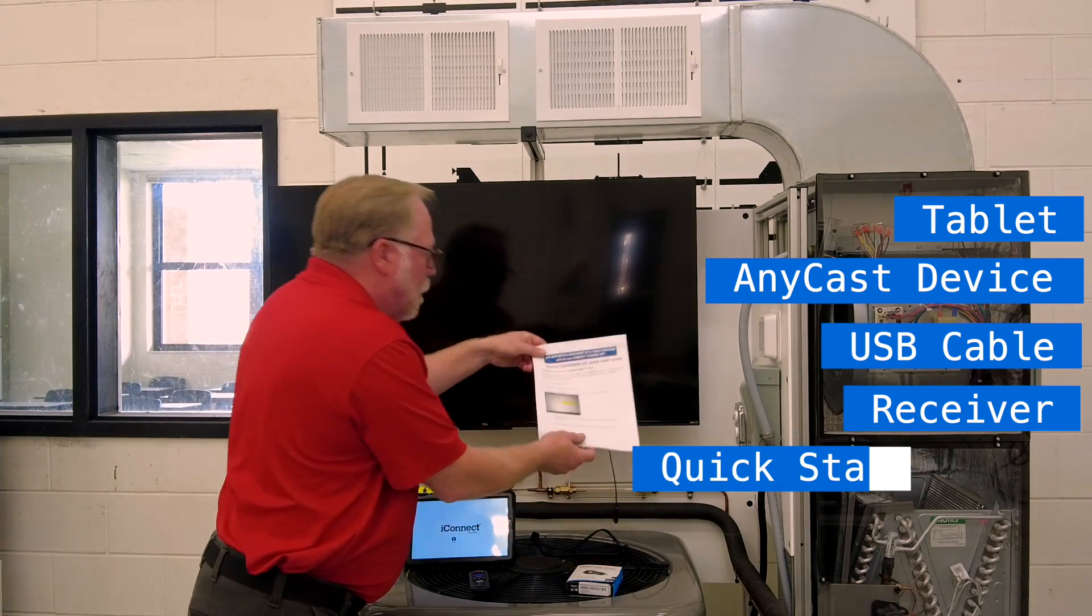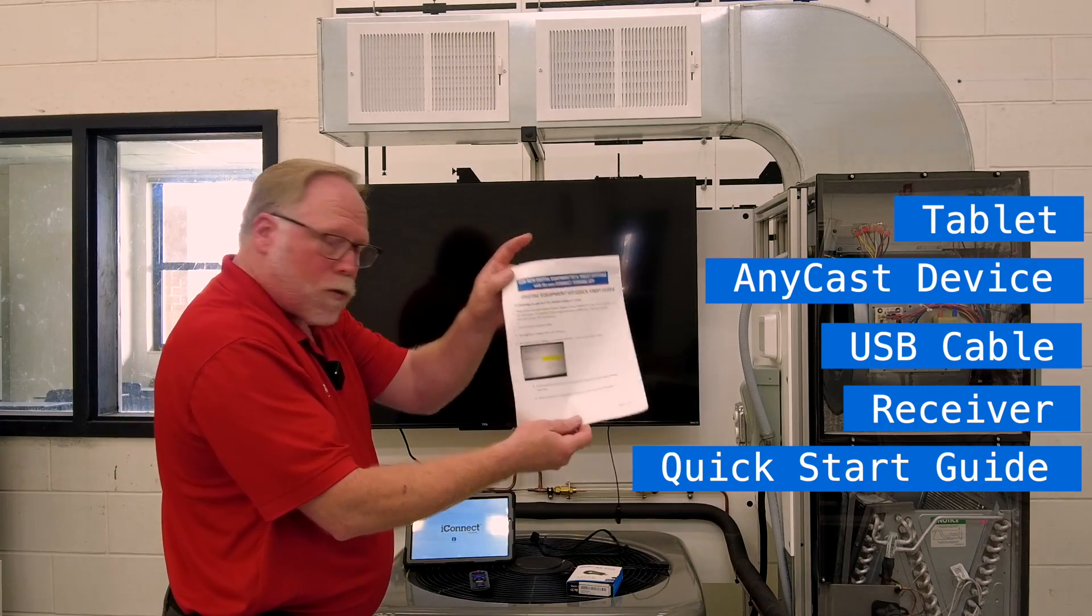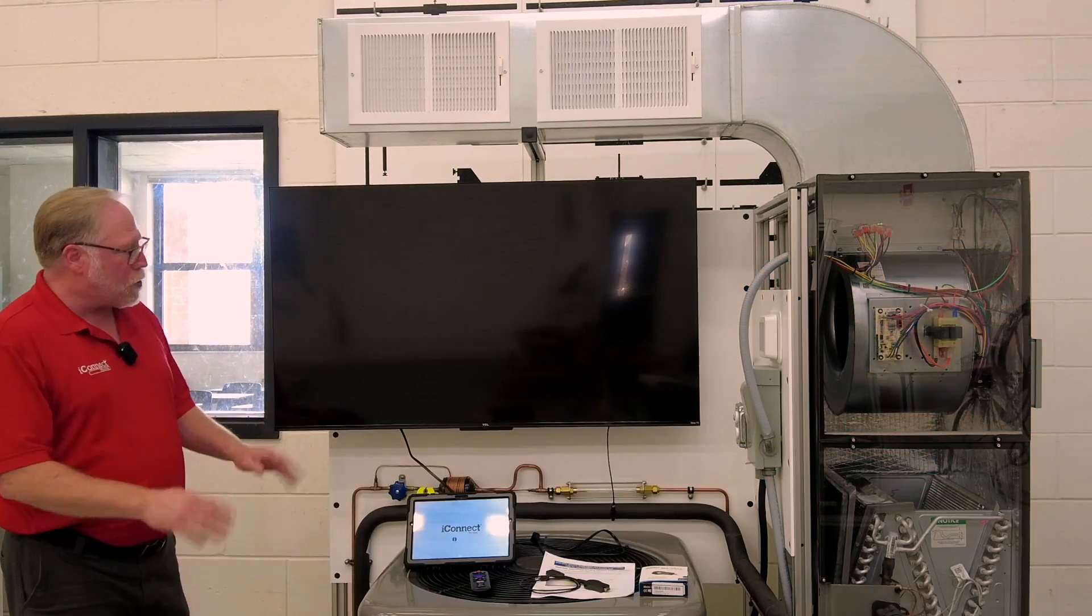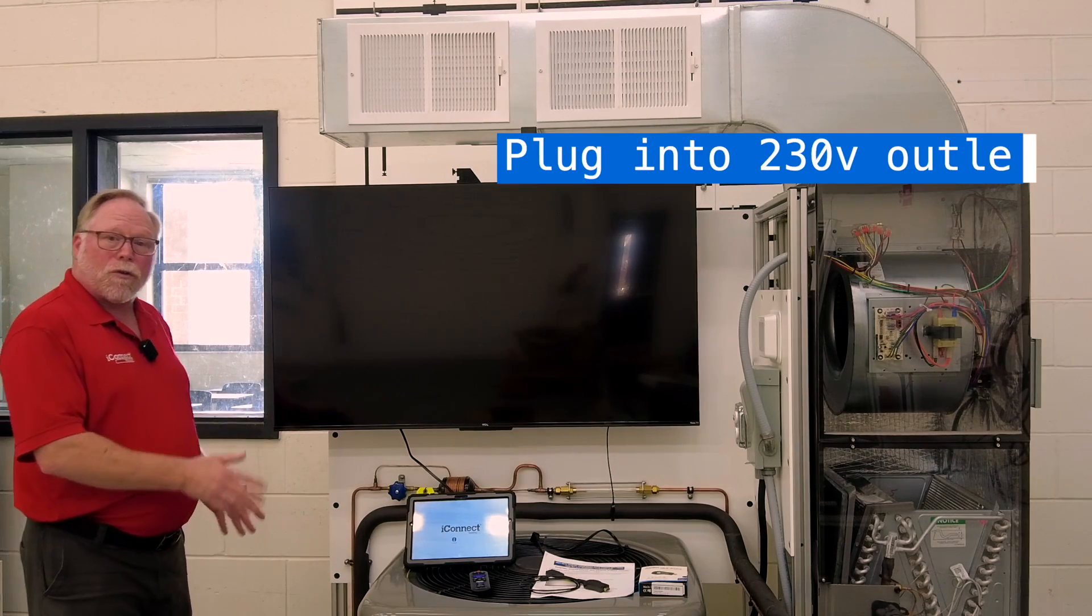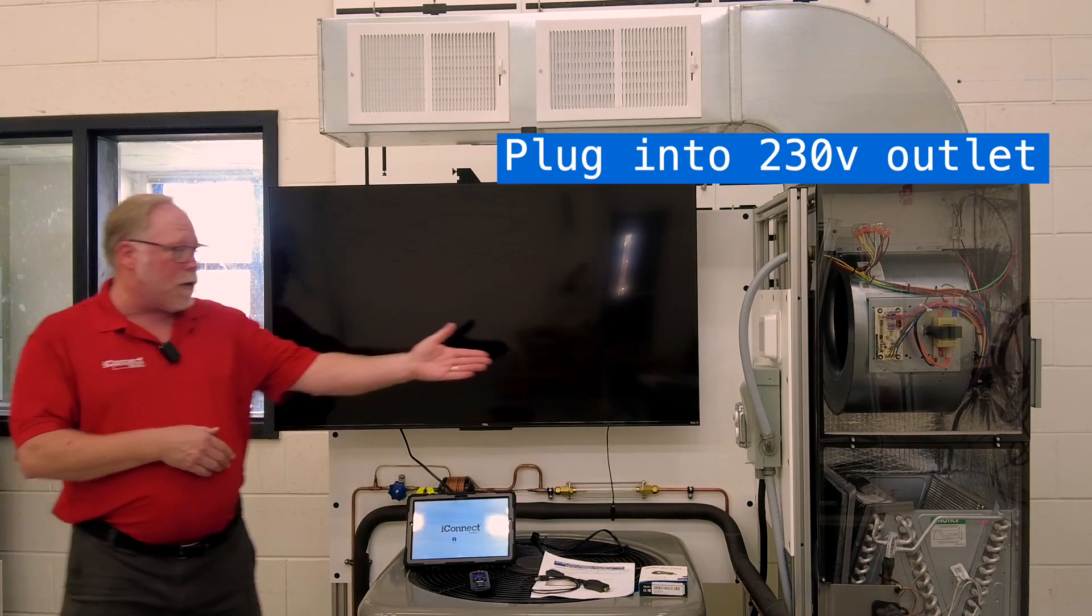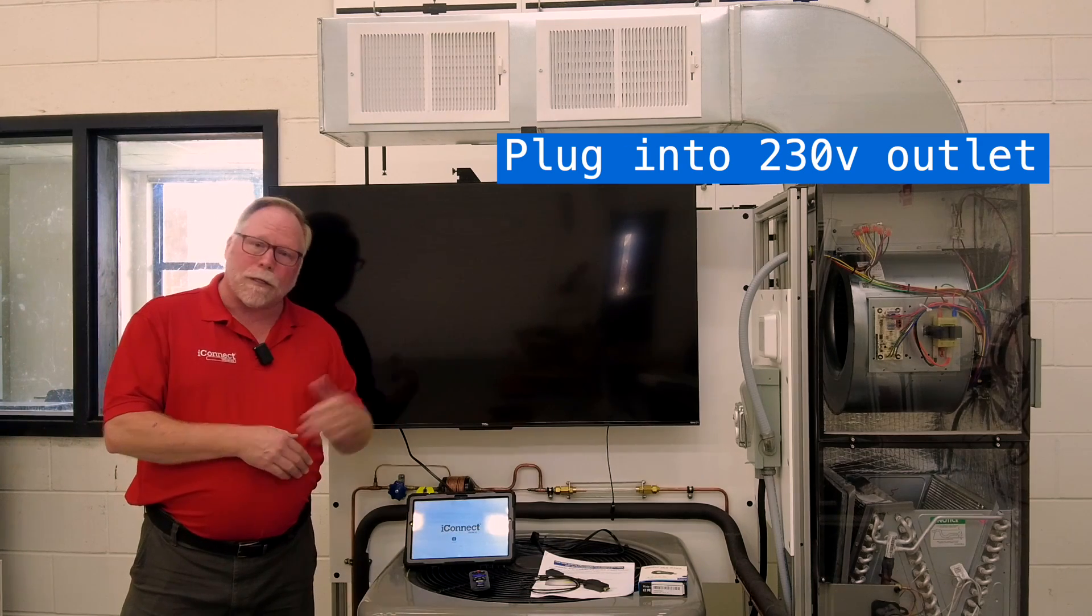And here's mine hanging down right now. Now we've given you a quick start guide which walks you through step by step. So first of all, when you get your system, be sure that it's plugged into the 230 volt outlet, because that's going to power up the 110 for our TV.